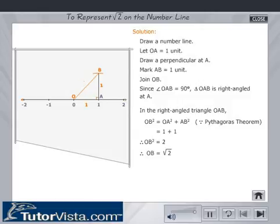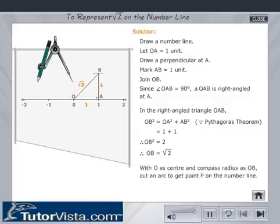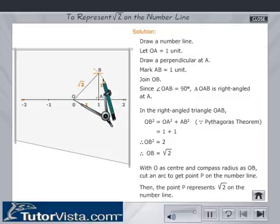OB equals root 2. With O as center and compass radius as OB, cut an arc to get point P on the number line. Then, the point P represents root 2 on the number line.